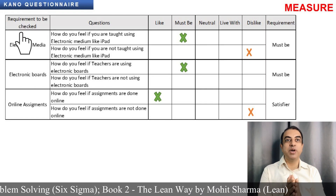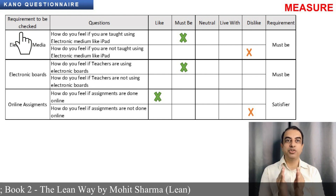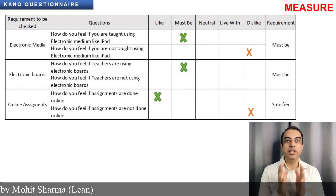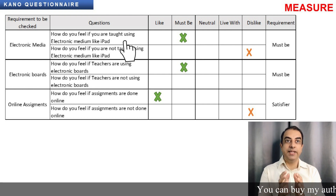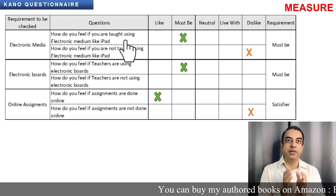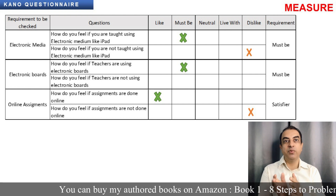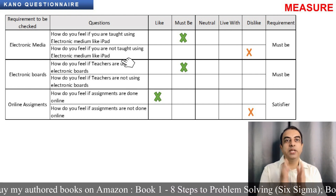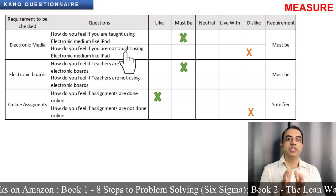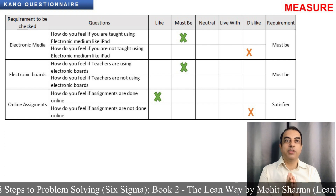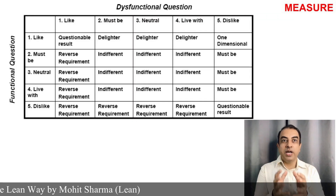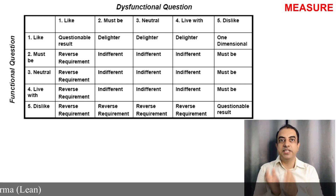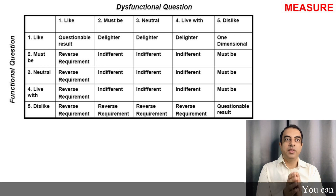In the Measure phase, the first step is to identify the requirements to be checked. This can be done by brainstorming with industry experts or by checking what is latest being used in the education industry. Create functional and dysfunctional questions. A functional question would be: how do you feel if you are taught using an electronic medium like an iPad? A dysfunctional question is the negative form — how do you feel if you are not taught using an electronic medium like an iPad? In this case, the customers of the process are students. You roll out the survey to get the responses of the students, and then following Kano analysis, you can identify whether a requirement is a basic expectation, satisfier or delighter for the customer. While creating the training module, these requirements can be kept in their respective order of priority.